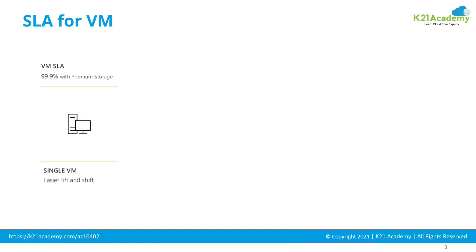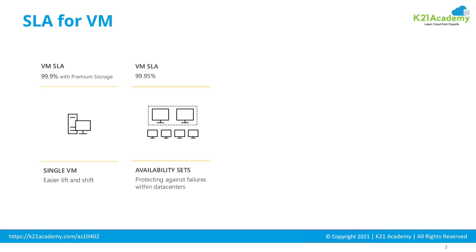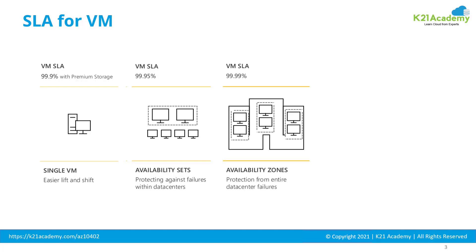From a service level agreement point of view for virtual machines: if you create a single virtual machine, you only get 99.9% uptime with premium storage. If you create two machines in a different availability set, meaning they go within the same data center but in different fault domains, then you get 99.95% service level agreement. Or if you create two machines inside two different availability zones, which means across different data centers, then you get 99.99% service level agreement.